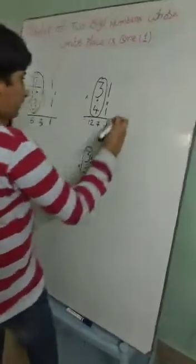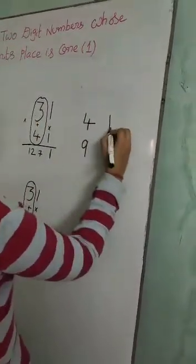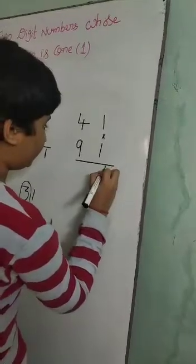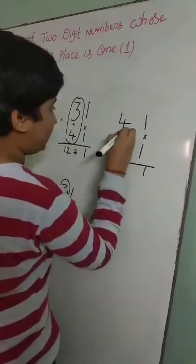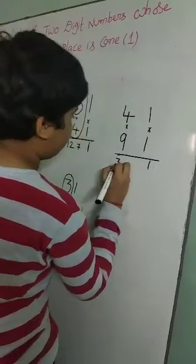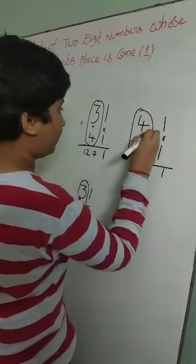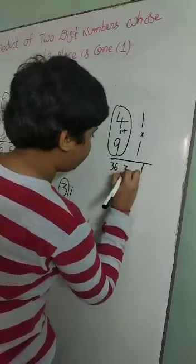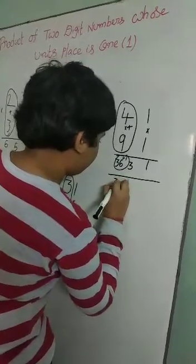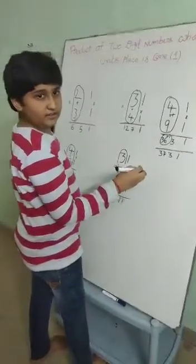Let us have one more example: 41 into 91. In the unit place there is 1, and in the 10s place there is 4 and 9. The unit place: 1 into 1 is 1. We multiply the 10s place: 4 into 9 is equal to 36. We add 4 plus 9, which is equal to 13. We write 3 here and carry 1 to 36, making it 37. The answer of 41 into 91 is equal to 3731.